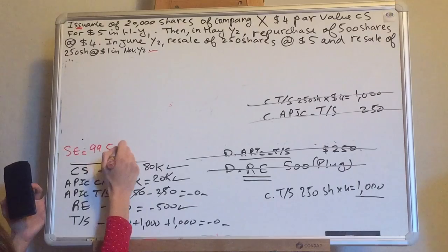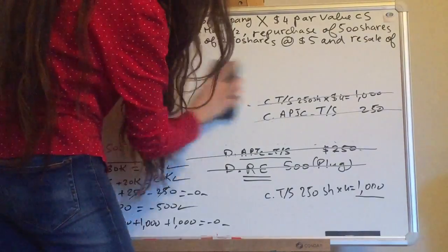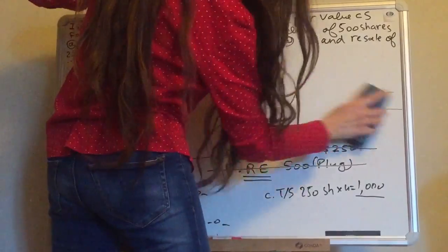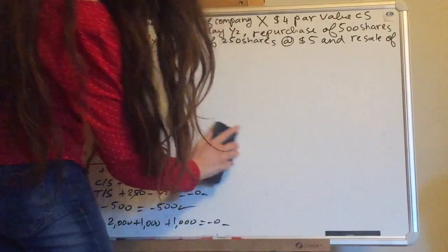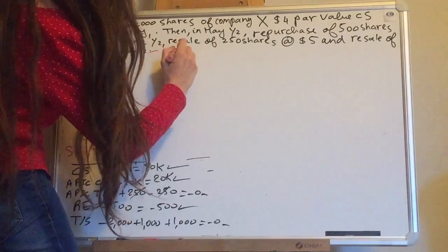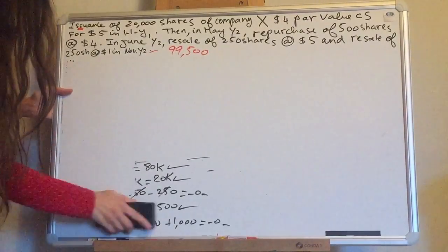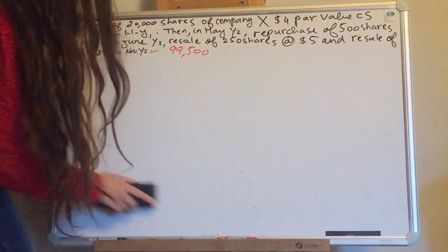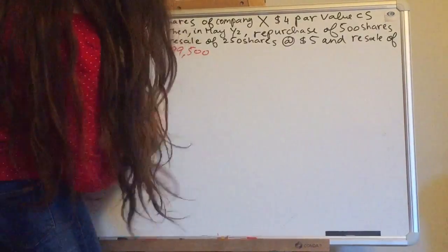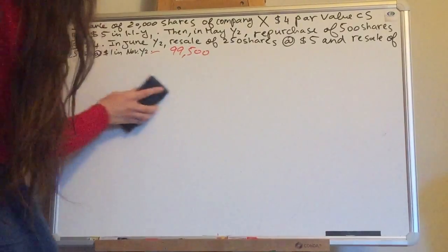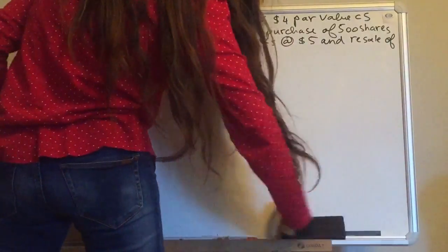My total stockholders' equity using the cost method is $99,500. Now let's redo this example using the par value method. To calculate everything related to the treasury stock, you have to use the par value.